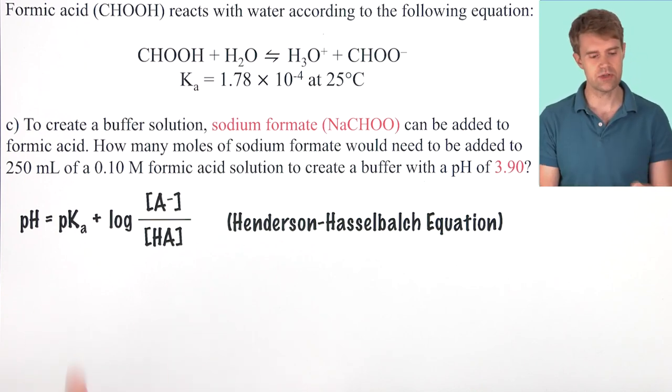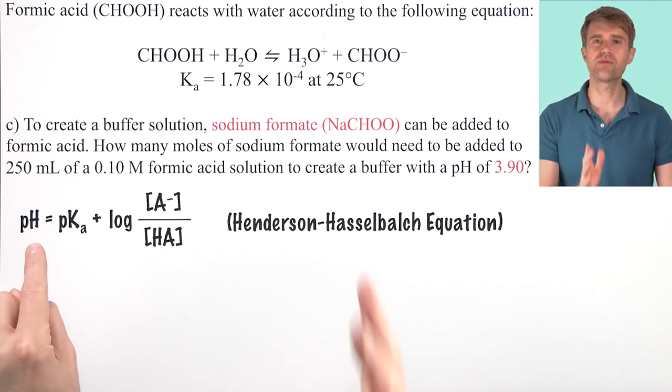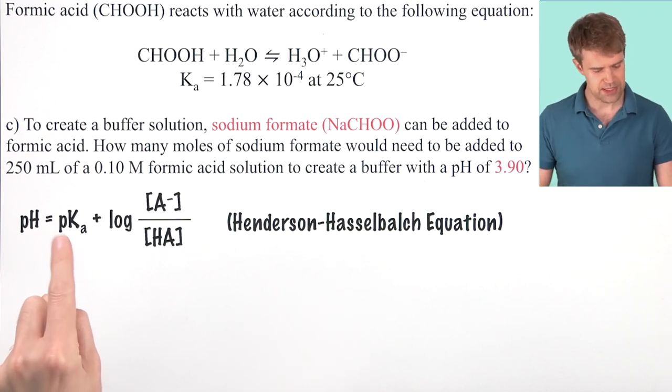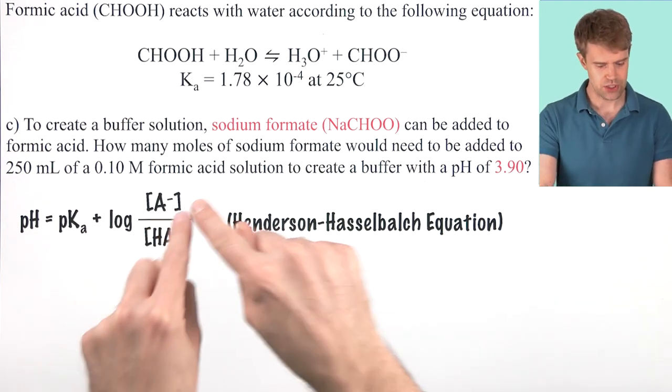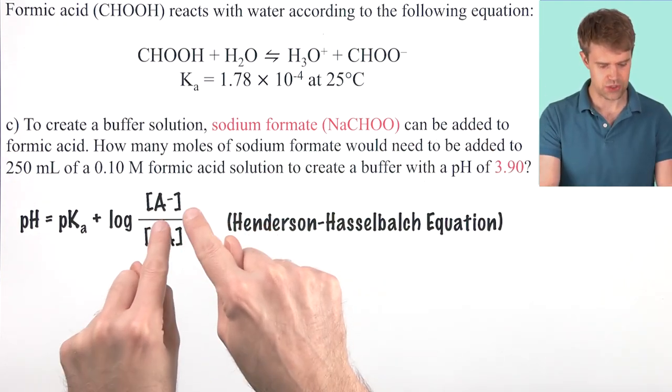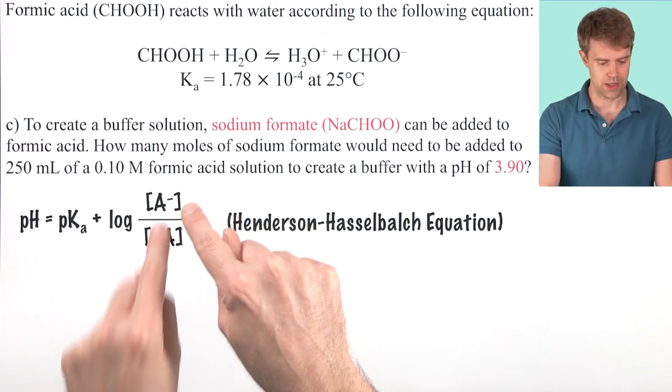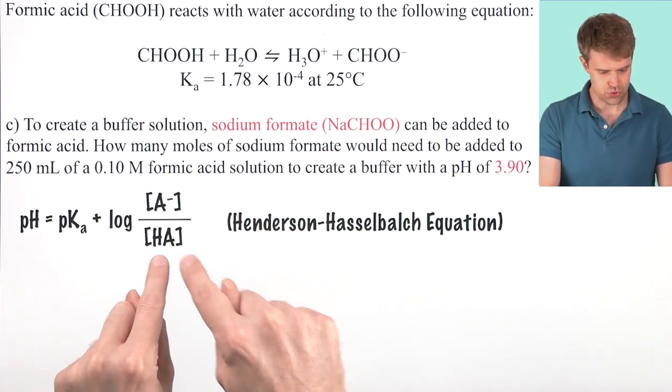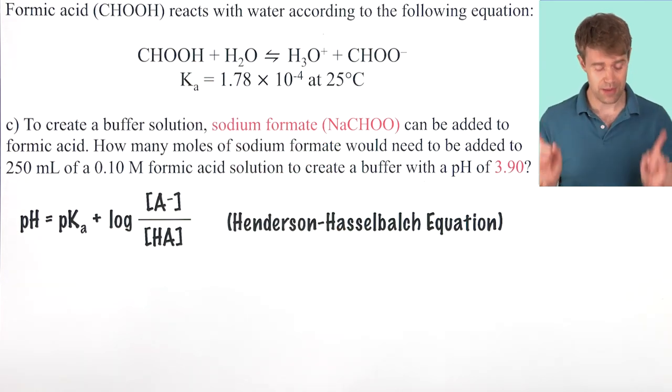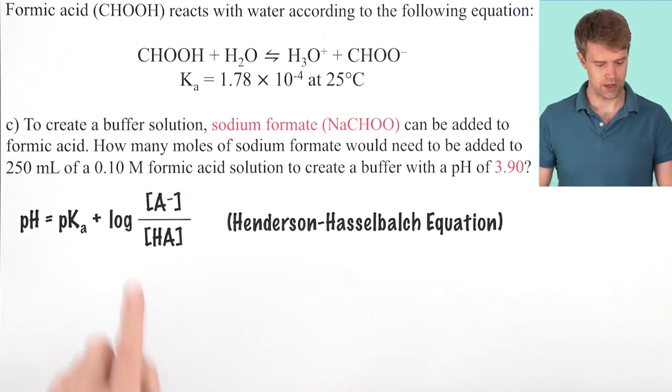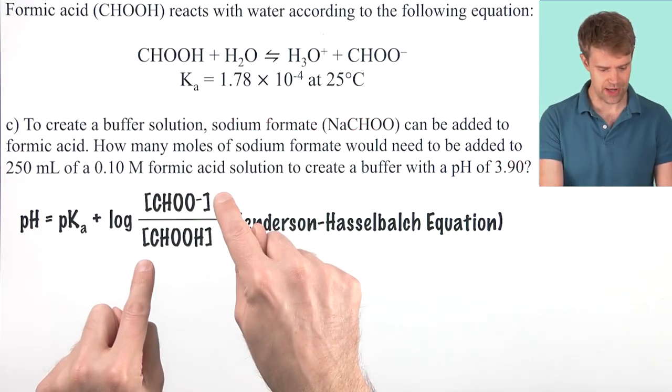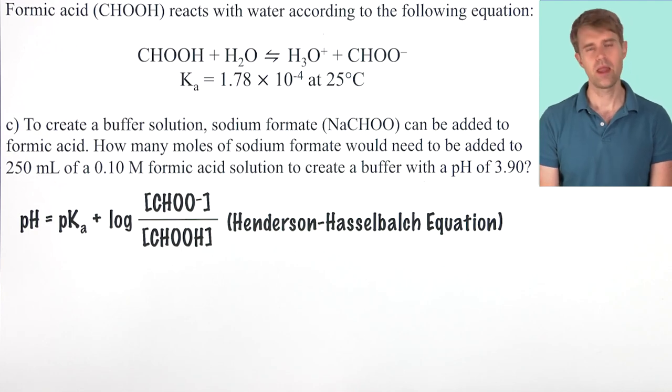And here is what it tells you. It says that the pH of a buffered solution is equal to the pKa of the acid plus the log of the conjugate base divided by, or I should say, the log of the concentration of the conjugate base divided by the concentration of the acid. And remember, for this problem, A minus is the formate ion, HA is formic acid. So, we can swap those in right now, formate and formic acid.